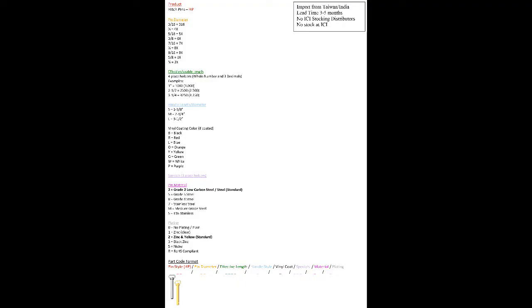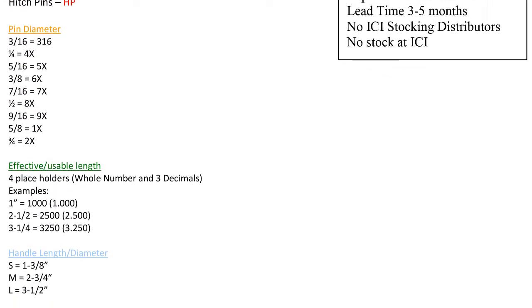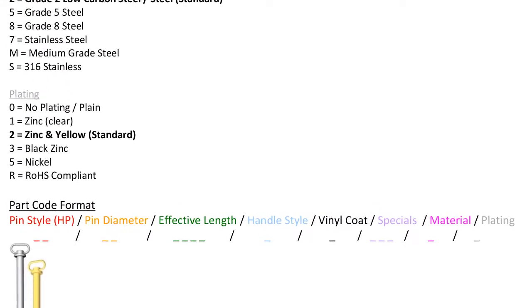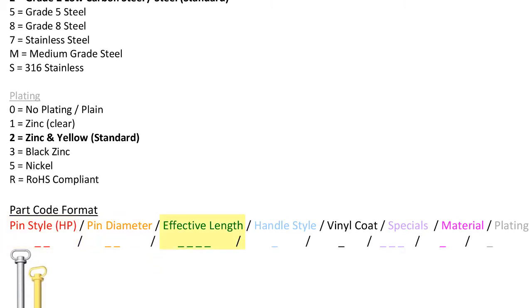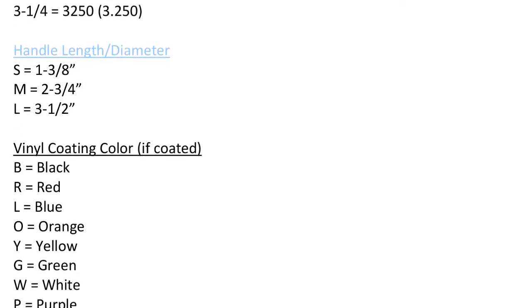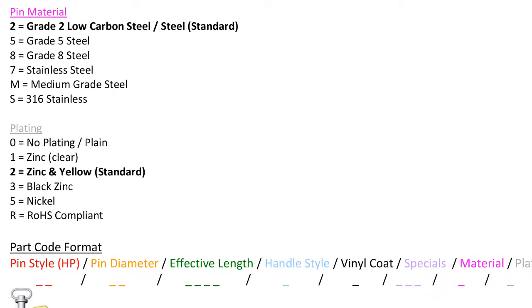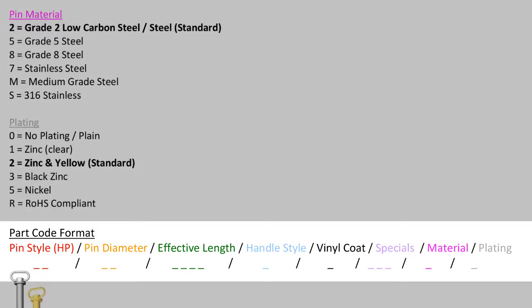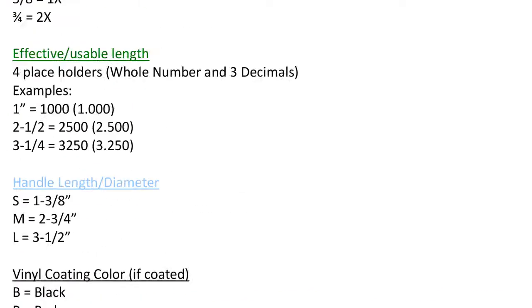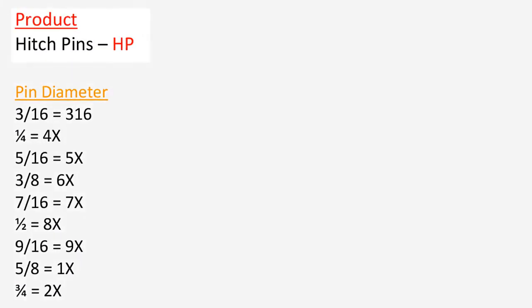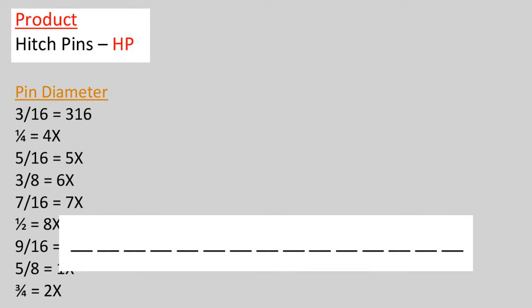Moving on to the part code guide. Hitch pins are composed of a 15-digit smart part code. All important attributes of the pin are broken up into categories and listed out on the part code guide. Follow the color-coded guide to translate the description into an Innovative Components part number. Located at the bottom of each guide is the layout of the smart part code. Use this to guide you when creating a part code. To start, take notice that the product listed in red is a hitch pin. All hitch pin part numbers will be a two-digit designator taking up the very first two spaces. All hitch pins will start with HP.